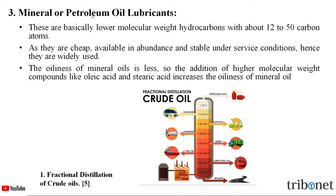The second one is mineral or petroleum oil lubricants. These are basically lower molecular weight hydrocarbons with about 12 to 50 carbon atoms. As they are cheap, available in abundance, and stable under service conditions, they are widely used. The oiliness of mineral oils is less, so the addition of higher molecular weight compounds like oleic acid and stearic acid increases the oiliness of mineral oils.